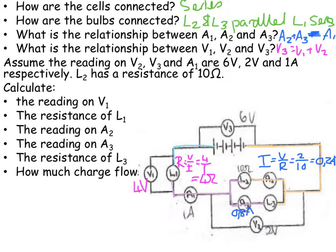What is the resistance of L3? Well, now I can say R is equal to V divided by I. What is the potential difference across L3? It's the 2 volts for the parallel network, and the current strength is 0.8. So that's going to equal 2.5 ohms.